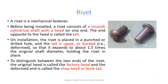The basic part in riveting is the rivet. A rivet is a mechanical fastener. Before being installed, a rivet consists of a smooth cylindrical shaft with a head on one end. The end opposite to the head is called the tail, as shown in the figure. On installation, the rivet is placed in a punched or drilled hole and the tail is upset or bucked by applying force, so that it expands to about 1.5 times the original shaft or shank diameter, and this head holds the rivet in place. To distinguish between the two ends of the rivet, the original head is called the factory head and the other deformed head is known as the shop head or buck tail.